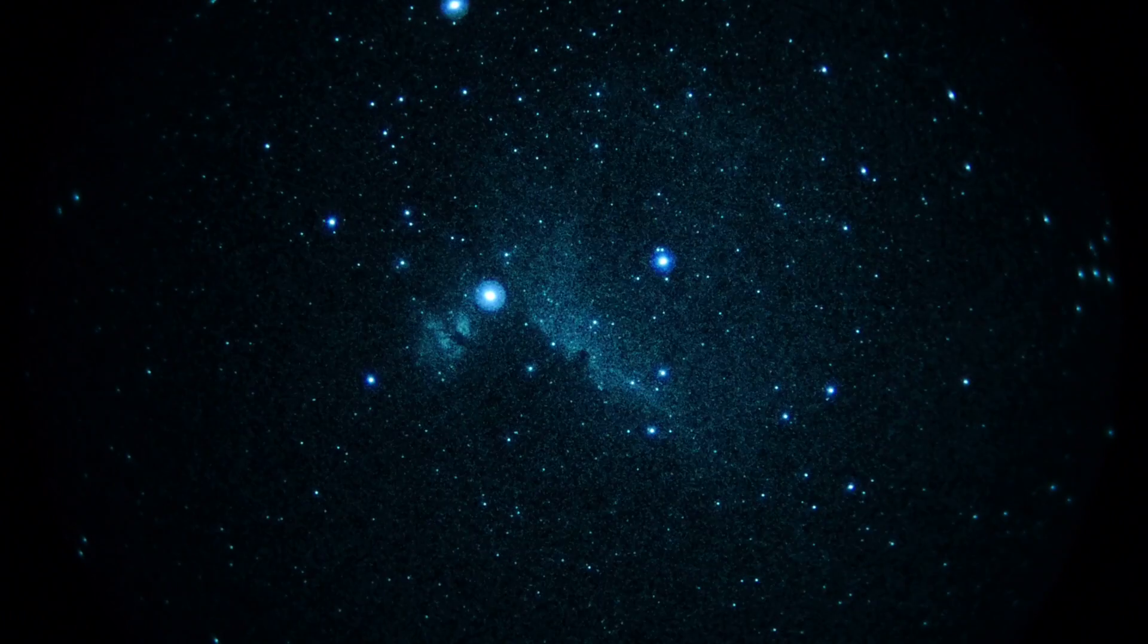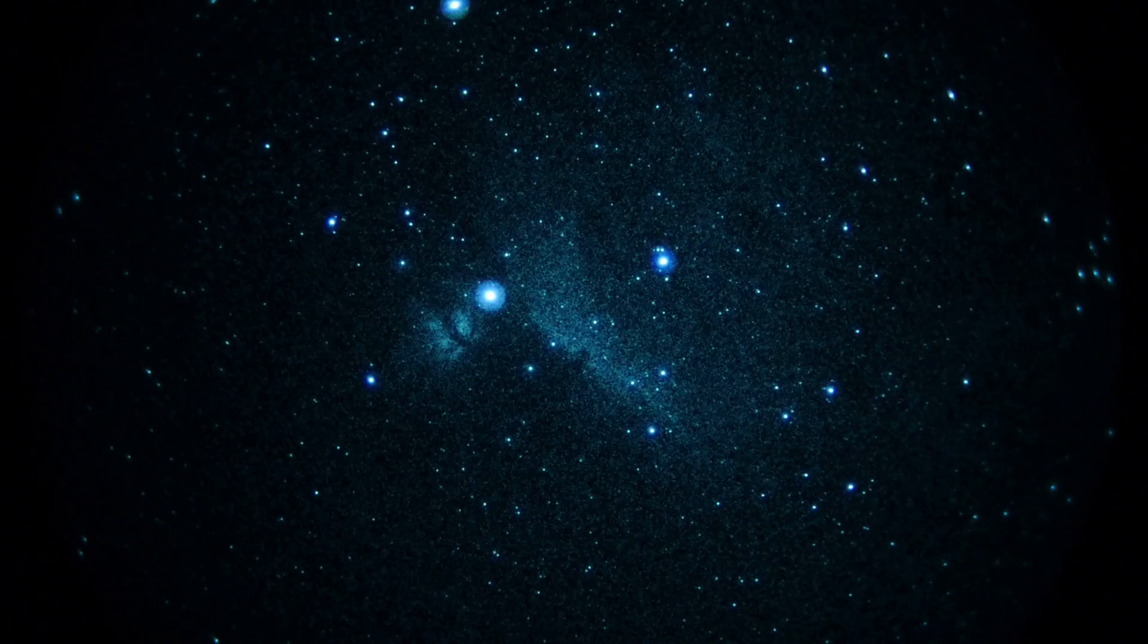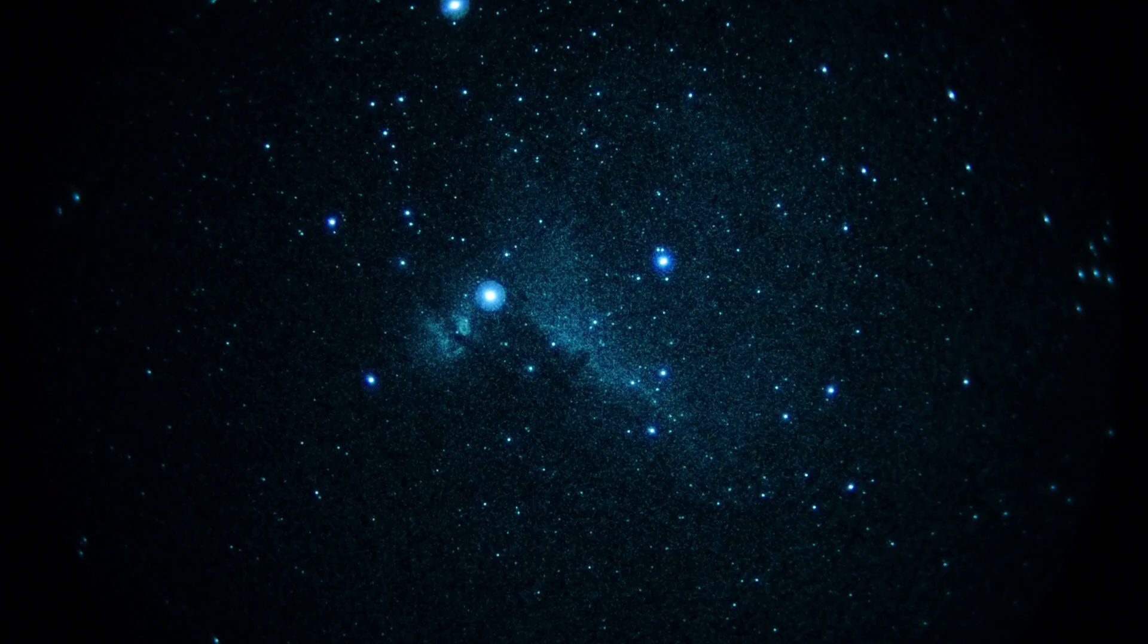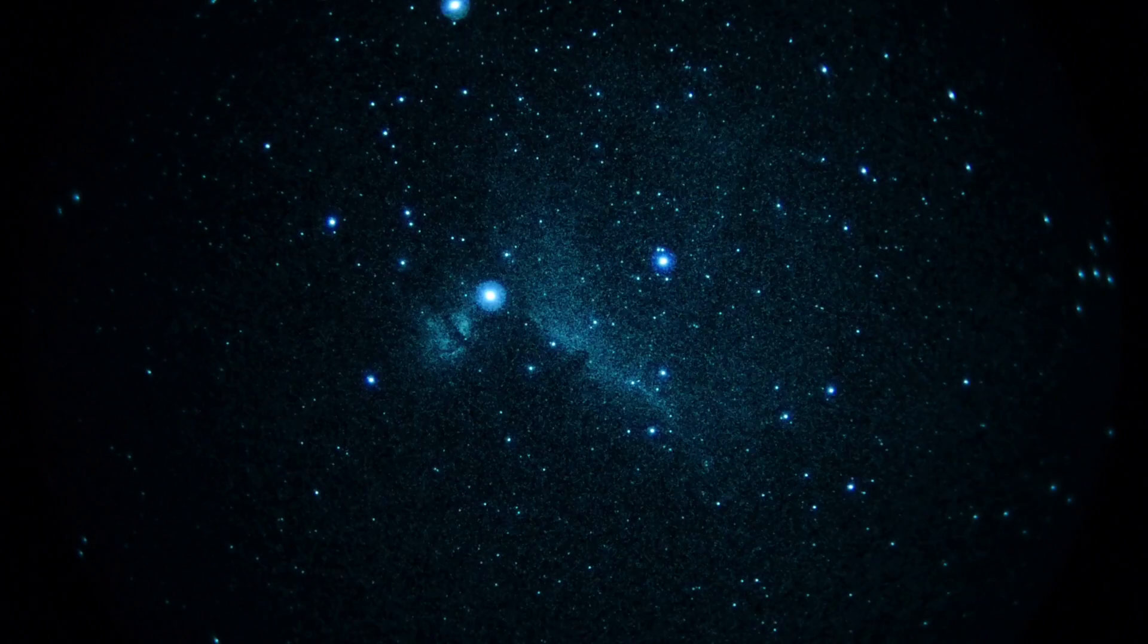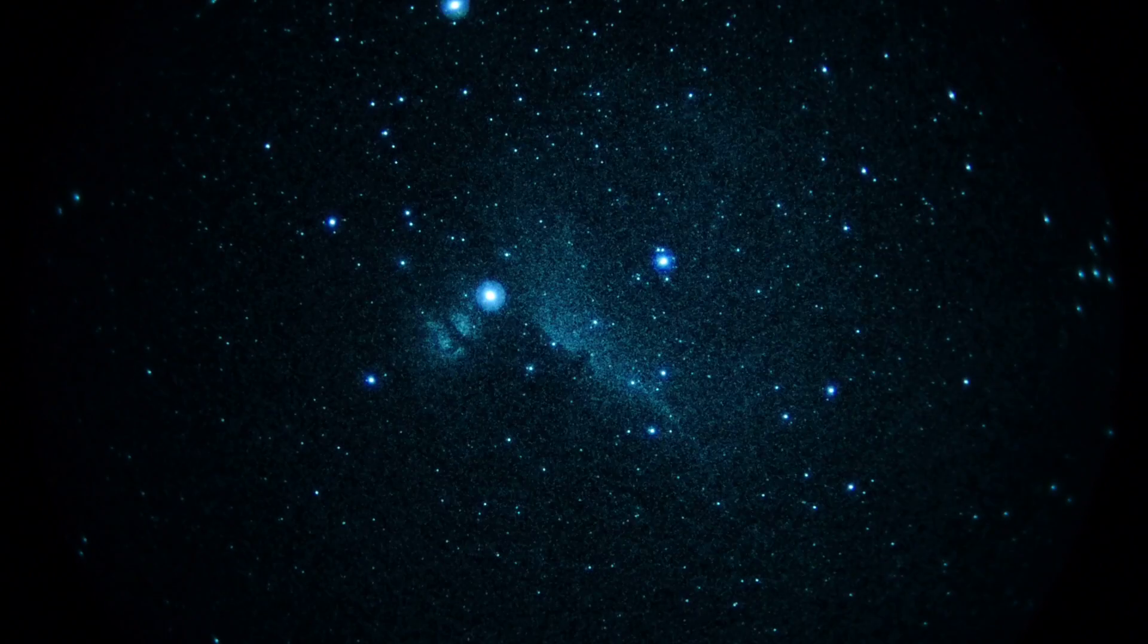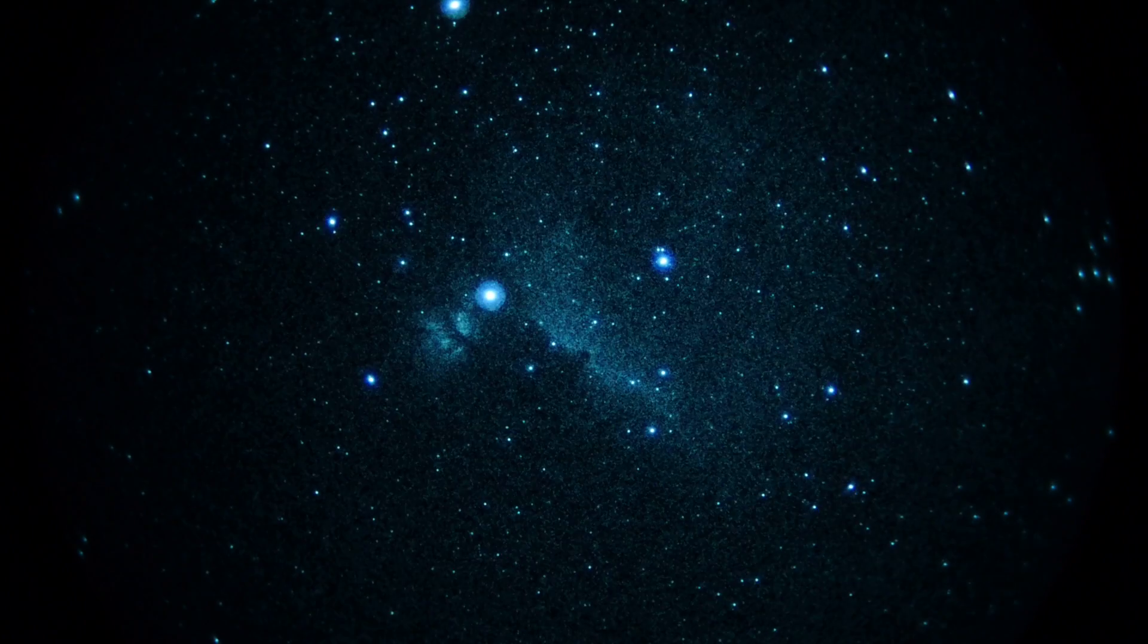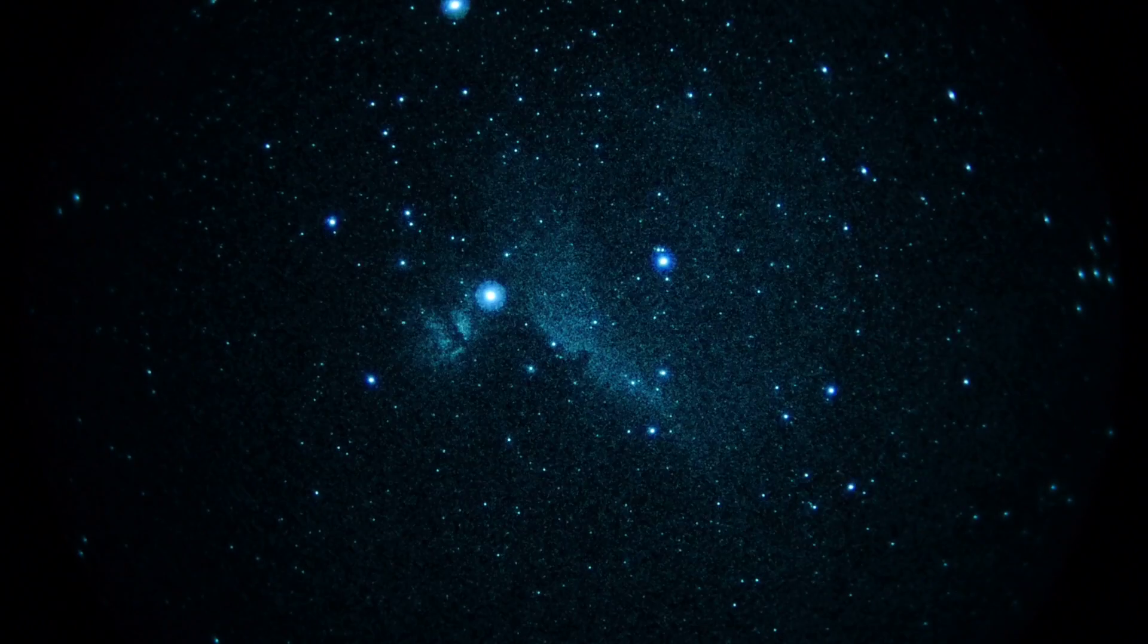Alright, take one of the Horsehead Nebula and the Flame. Got them through a Zeiss 200mm f2 lens running at f2 and a Gen3 unfilmed white phosphor image intensifier, plus a Panasonic GH3 camera which is set to a slow frame rate of a quarter second shutter, ISO 800.